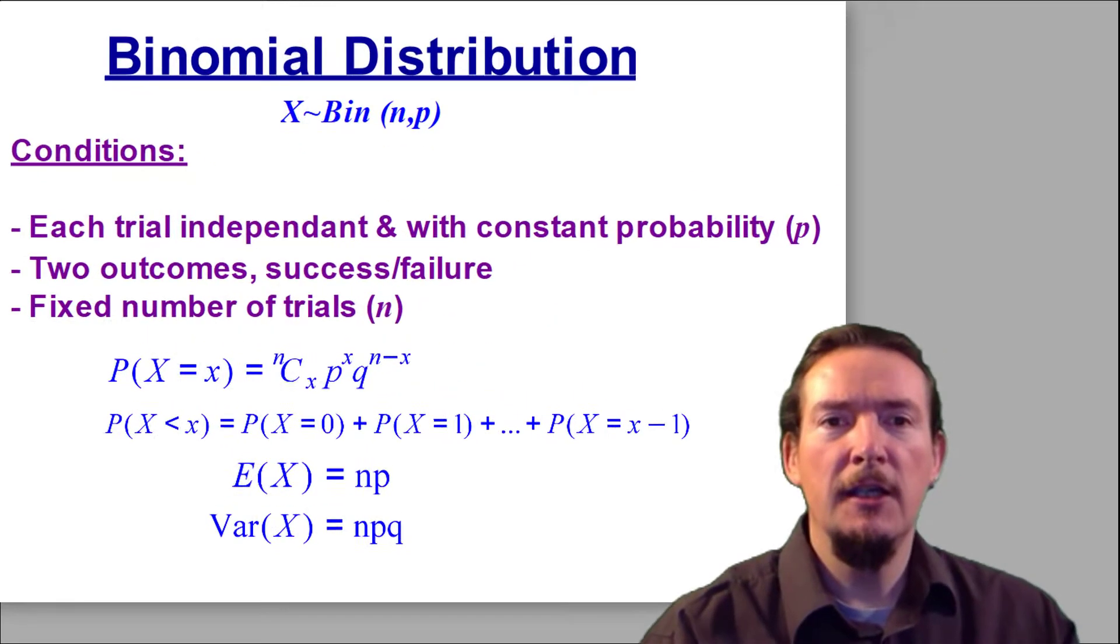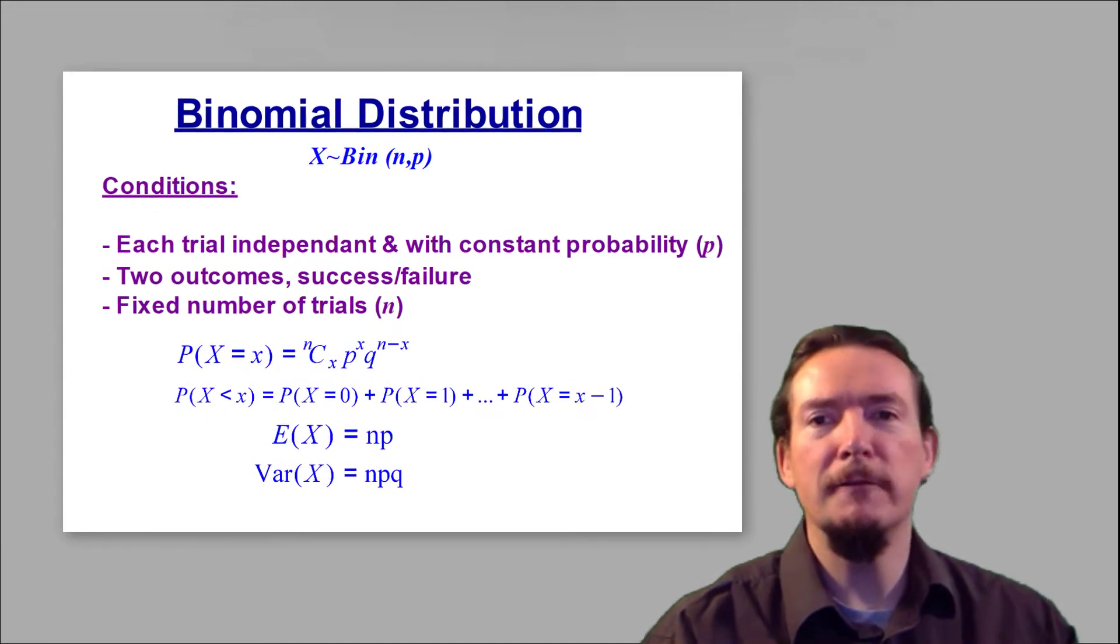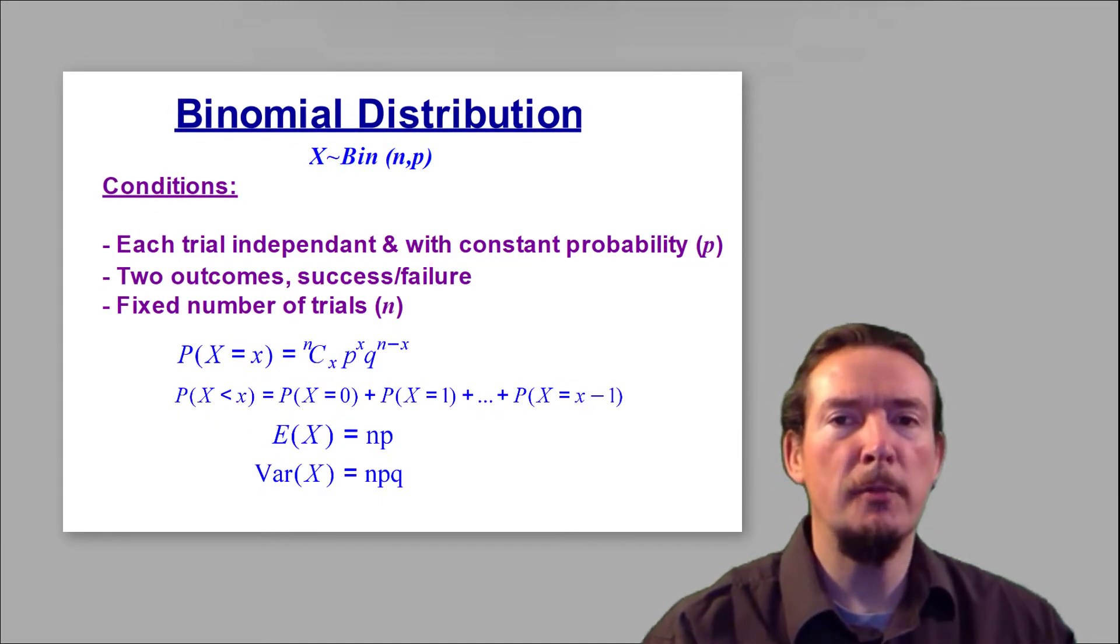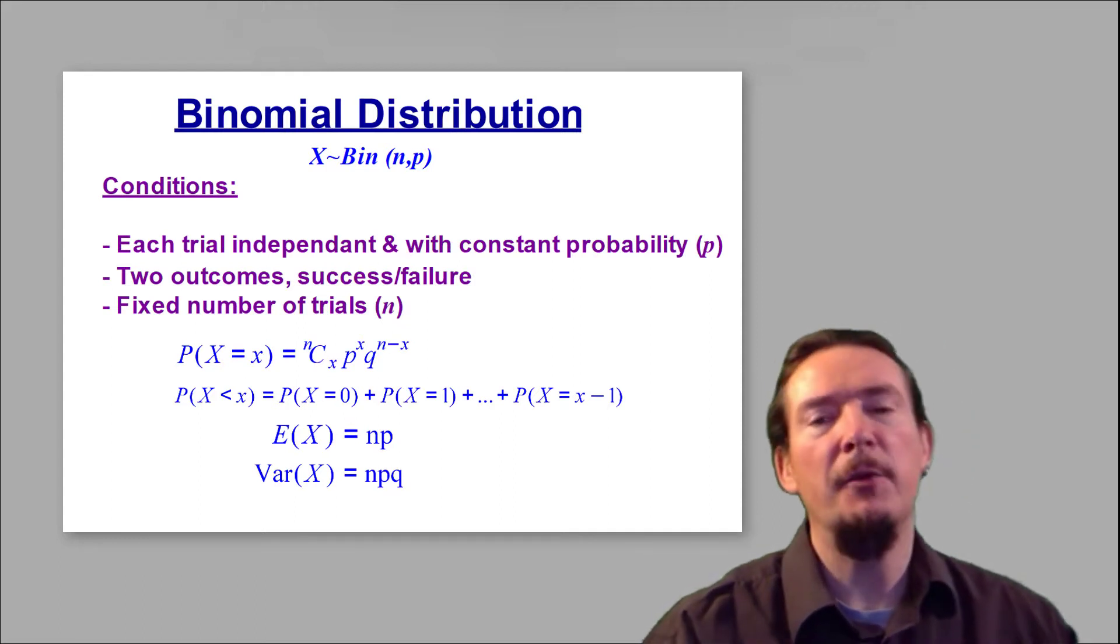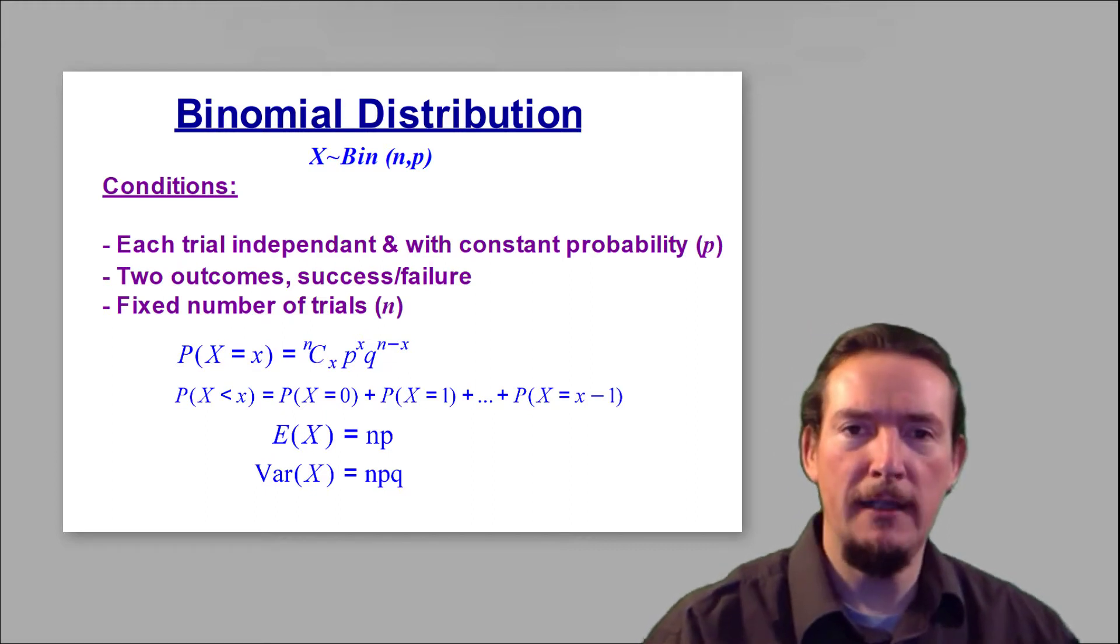Often in exam questions, you will need to figure out for yourself that the binomial distribution needs to be applied. You are looking for scenarios involving a series of independent trials, each trial with a constant probability of success, which we normally denote with the letter P, and where there are two distinct outcomes, success or failure.